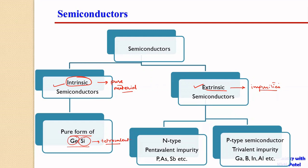If the impurity is pentavalent — pentavalent means five valence electrons — and since germanium and silicon are tetravalent, adding a pentavalent impurity provides an extra electron that can be utilized for conduction of electricity. This extra negative charge gives us what we call an N-type semiconductor. Examples of impurities added are phosphorus, arsenic, or antimony.